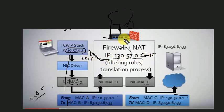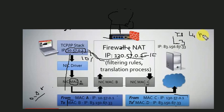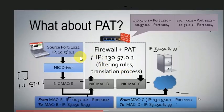This is the key difference in dynamic NAT versus static NAT. In NAT, the source port changes as well. Layer 3 changes the IP address, and layer 4 changes the TCP port. In static NAT, there is a 1-to-1 mapping: one private IP maps to one public IP.